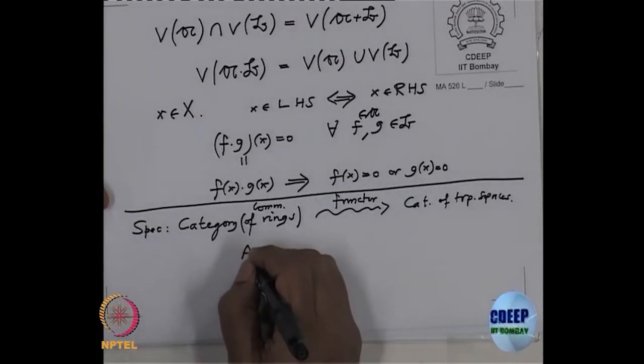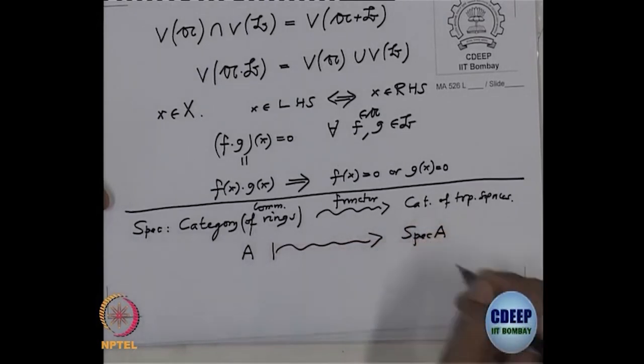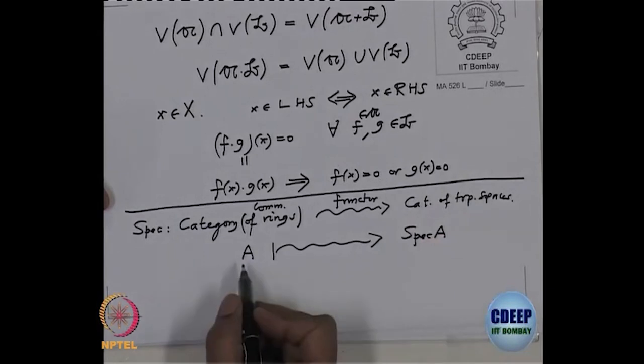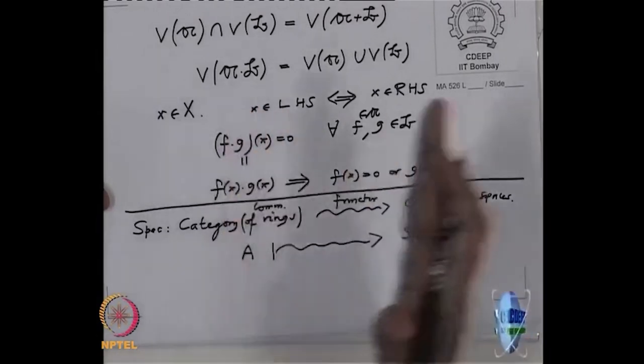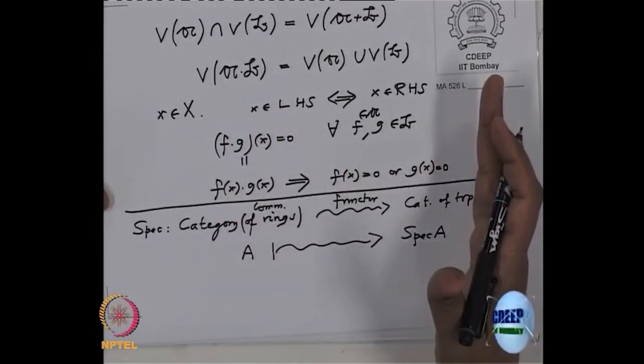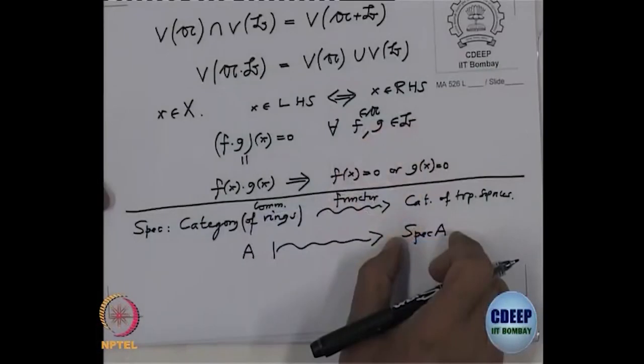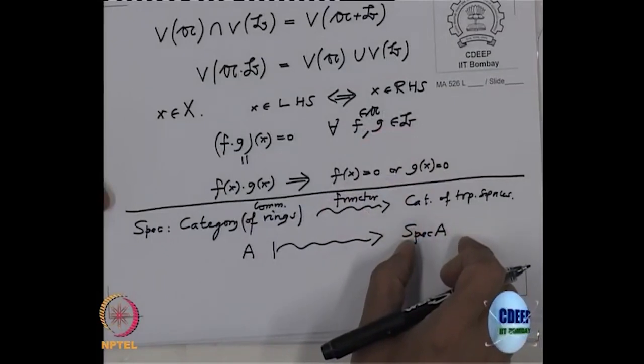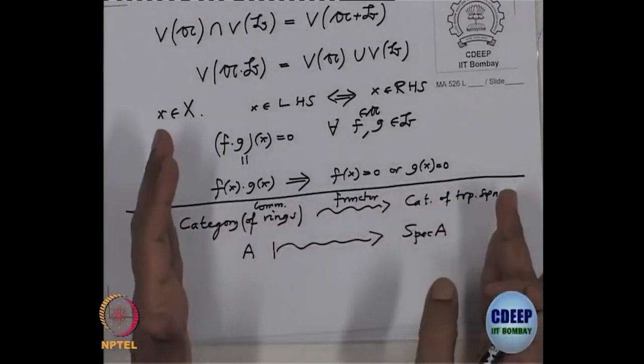But given a ring, we have attached a topological space to that. And what one wants to do is one wants to study, one wants to get information about the rings by using the topology information. And one would like to actually come back also. That means this is a natural equivalence. So that means from this given topological space, one wants to recover your ring also. And this interplay is precisely what is called abstract algebraic geometry.